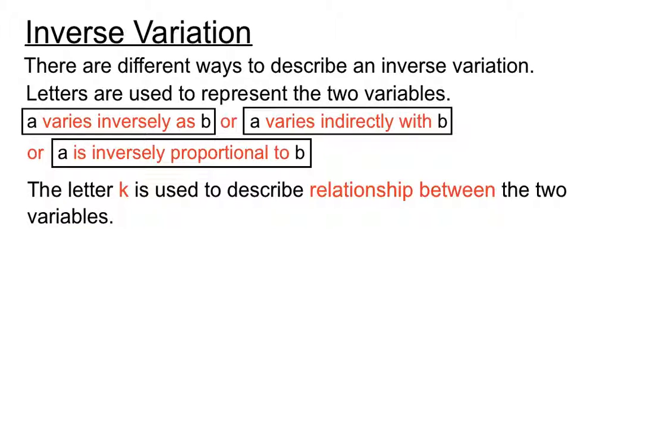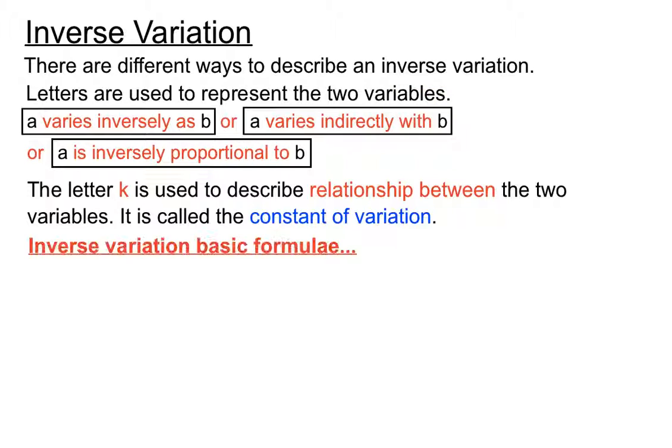The letter k is used to describe the relationship between the two variables, but it's used in a slightly different way than the direct variation. It's called the constant of variation. The inverse basic formula is A varies inversely as B, then A equals k on B. The direct variation question had A equals kB, but that's for direct variation. This is the basic formula for inverse variation.